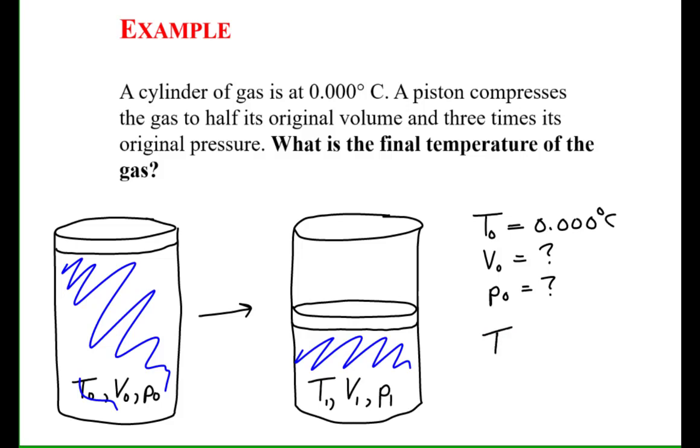Our goal is to find the final temperature of the gas, T₁. We know that the gas in this state is compressed to one-half of its original volume. We also know that the pressure in this state is three times the original pressure.